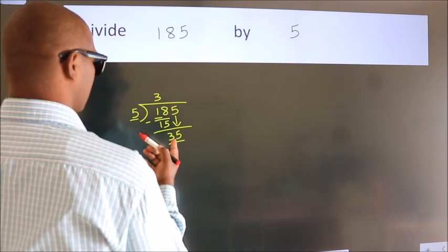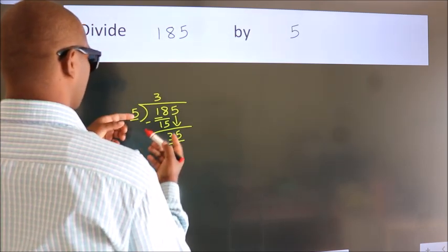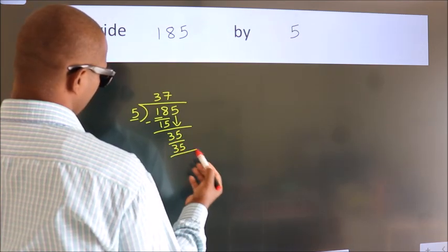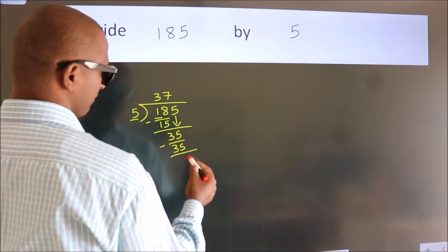When do we get 35? In the 5 table. 5 sevenths, 35. Now we subtract. We get 0.